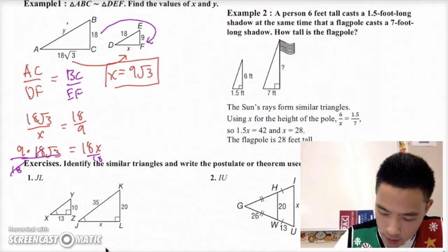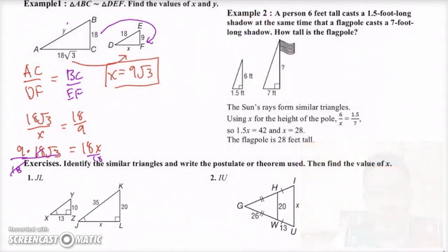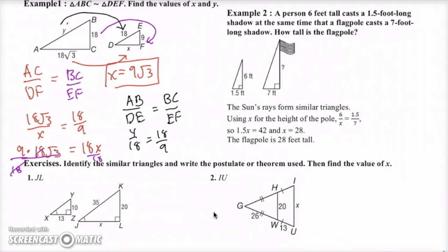Now solving for y, we set up a different proportion: AB over DE equals BC over EF. That gives us y over 18 equals 18 over 9. We can simplify 18/9 to 2 over 1, and so in the end our y equals 36.